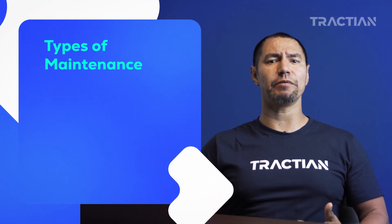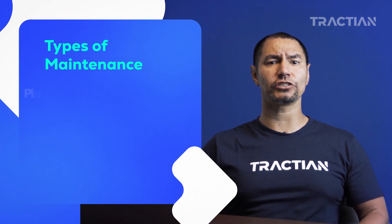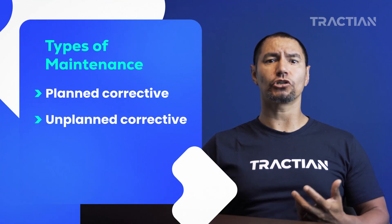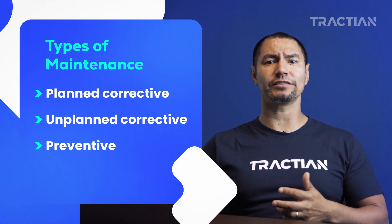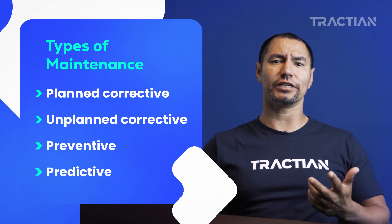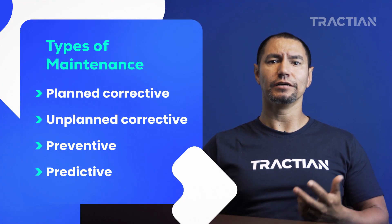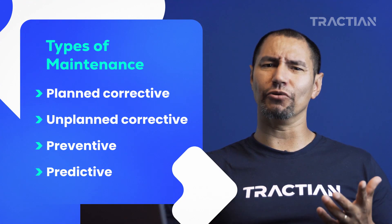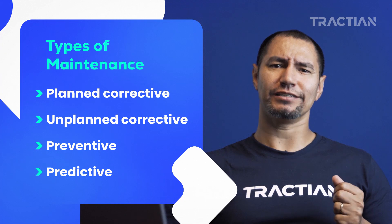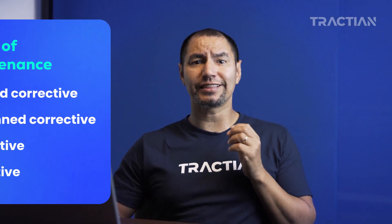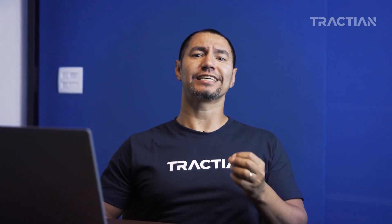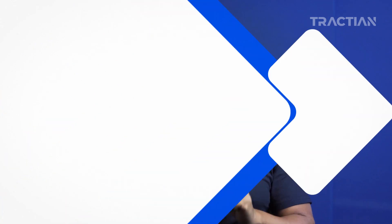Basically, we can classify maintenance interventions into planned or unplanned, corrective, preventive, and predictive maintenance. But you probably know this already, right? The interesting thing is that each type of maintenance has its characteristics in relation to the resources and its total cost.